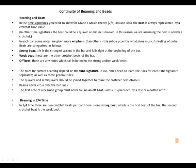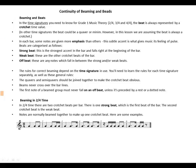In 2/4 time there are two crotchet beats per bar. There is one strong beat, which is the first beat of the bar, and the second crotchet beat is the weak beat. Notes are normally beamed together to make up one crotchet beat. For example, in 2/4 we have beamed notes that give us a crotchet's worth, including rests — even a rest contributes to completing a crotchet beat.